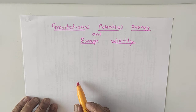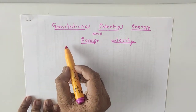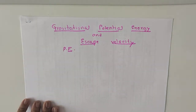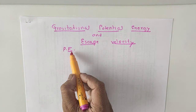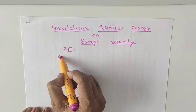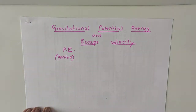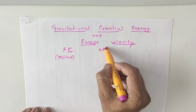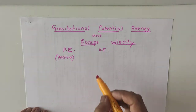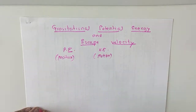When we consider energy, as we know there are two types of energy. One is Potential Energy, which is the energy possessed by a body on account of its position. It is called Potential Energy. And second is Kinetic Energy, which is the energy possessed by a body on account of its motion. It is called Kinetic Energy.